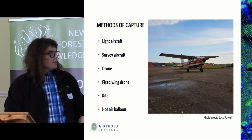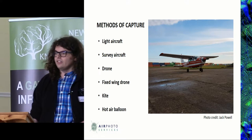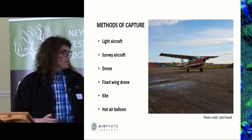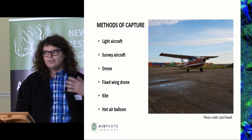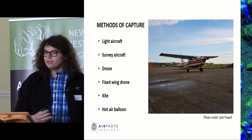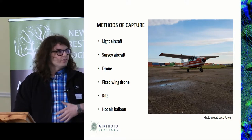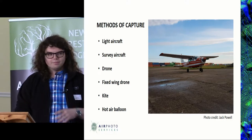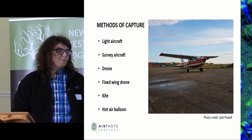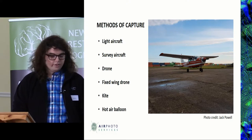There are quite a few methods to capture air photos. The most commonly known is a light aircraft with someone looking out of the window. We also have bespoke survey aircraft like the Environment Agency's, historic RAF surveys from the 1940s, and more recently drones and fixed-wing drones photographing the landscape. We can also have kite photography, and some of the earliest air photos were taken from hot air balloons, including the first aerial photo taken of Stonehenge.